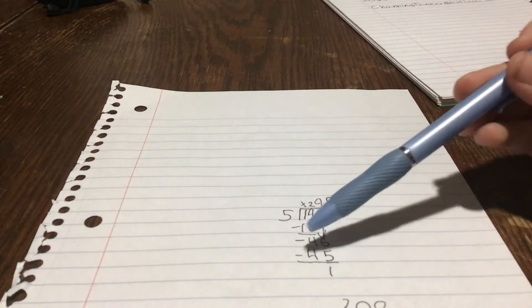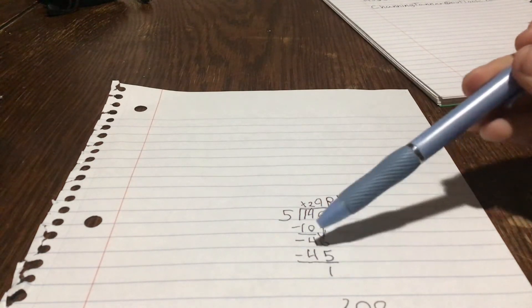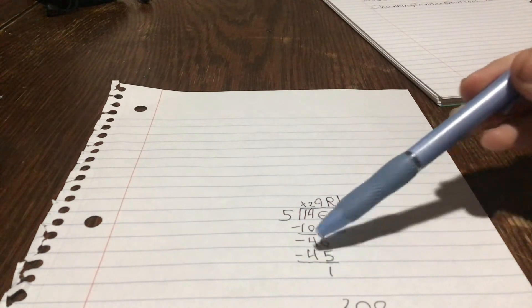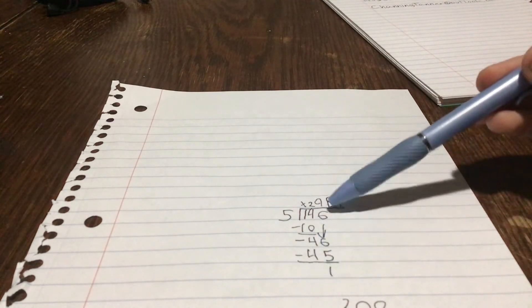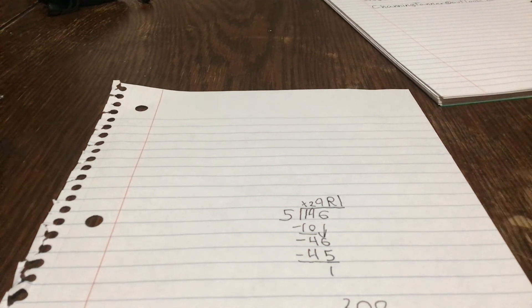And then you bring down the six and it goes into 46 nine times, you have 45, and you minus that and then you have one and your remainder is one. Boom, and that's how you do it folks.